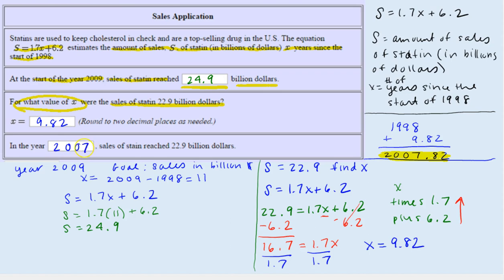So here we put, in the year 2007, the sales of statin reached $22.9 billion.